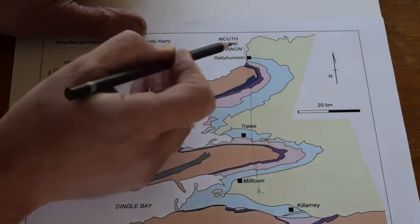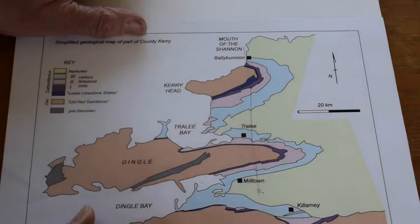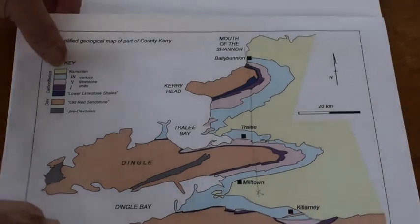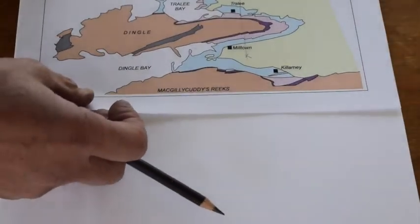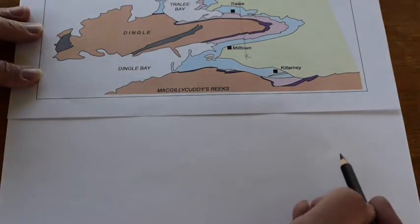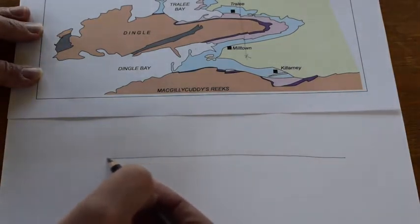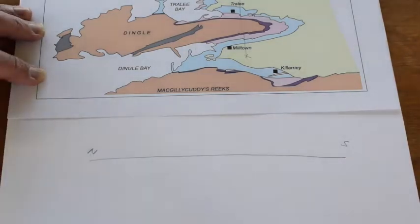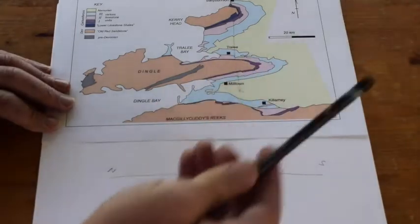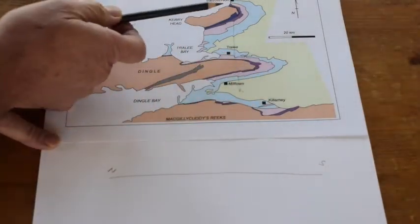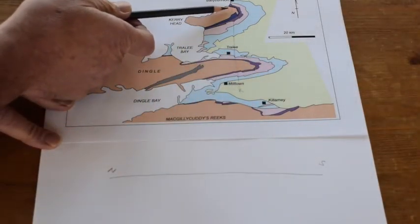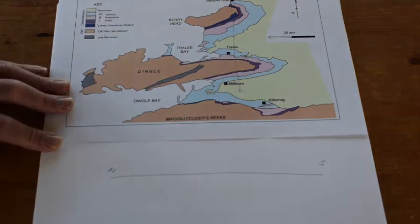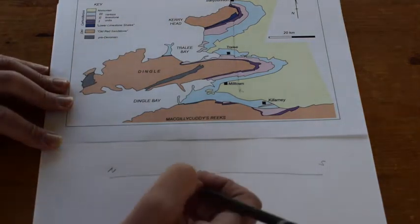To understand this, let's try and draw a cross-section from the mouth of the Shannon down through here. Let's give ourselves some space and we can draw a cross-section line through here from north to south.